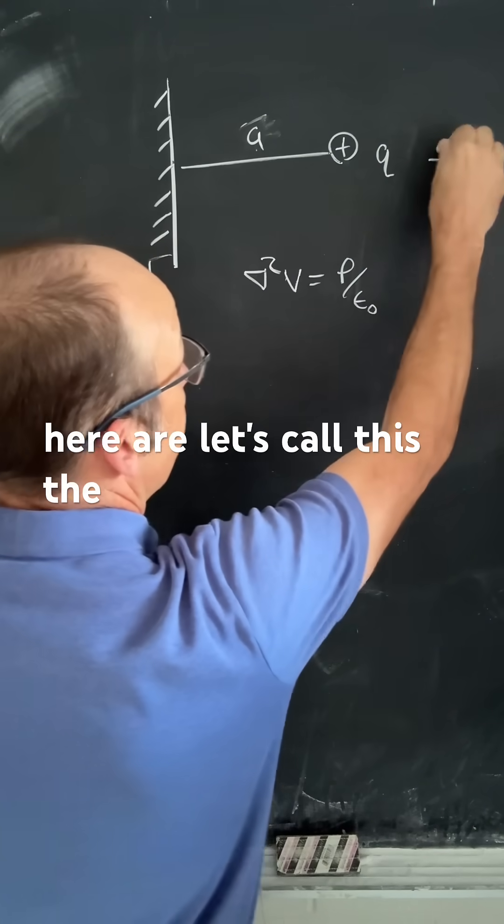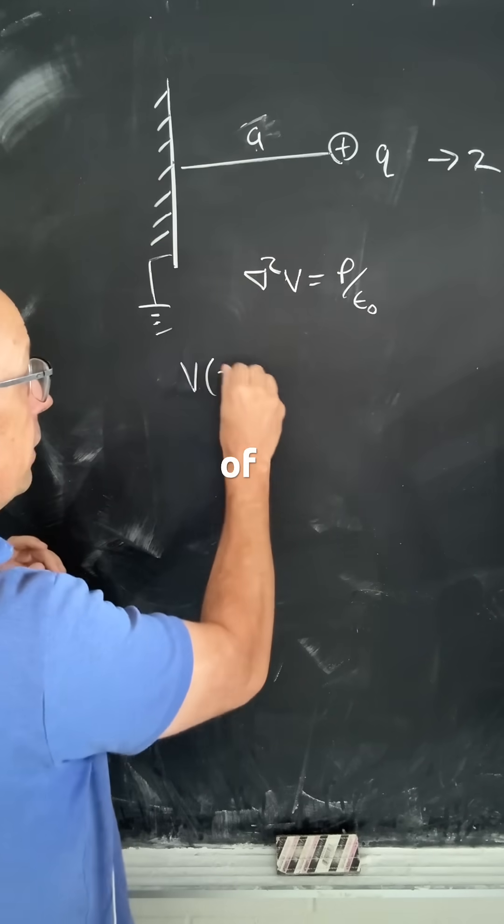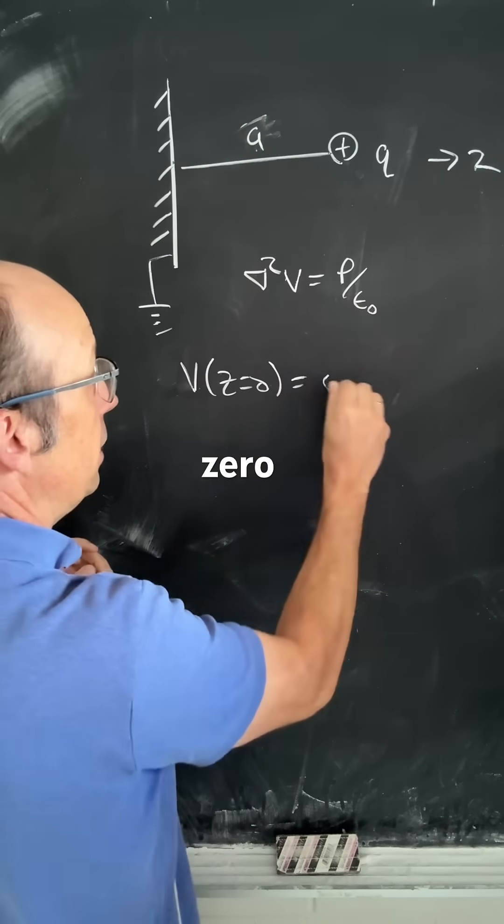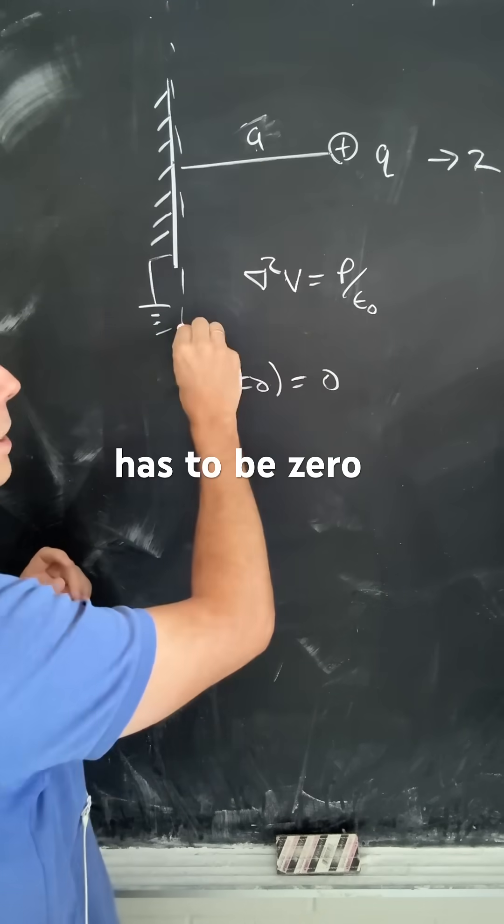So the boundary conditions here are—let's call this the z direction—at z, V(z=0) is 0, because that's a grounded plate. The potential right here has to be 0.